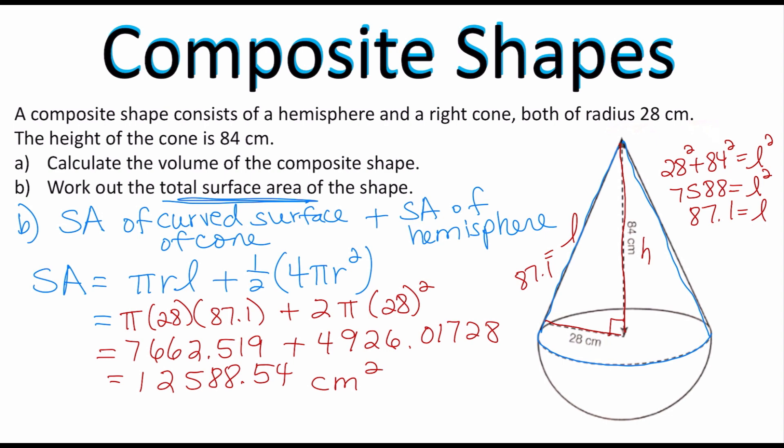If you're doing this for the IB exam then you would want to round to three significant figures which will be 12,600 square centimeters.